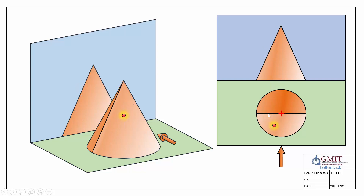Now, like with our sphere, we're going to look at what happens if we have point P at the front or at the back of the object — so not on our extreme generator. Here we can see point P is located in front of the object. We're going to roll our point all the way around onto the side view, onto our extreme generator, locate it in our front elevation, and then roll it back to the front. It's a two-stage process: first rolling it onto the side, and then rolling it back into its starting position.